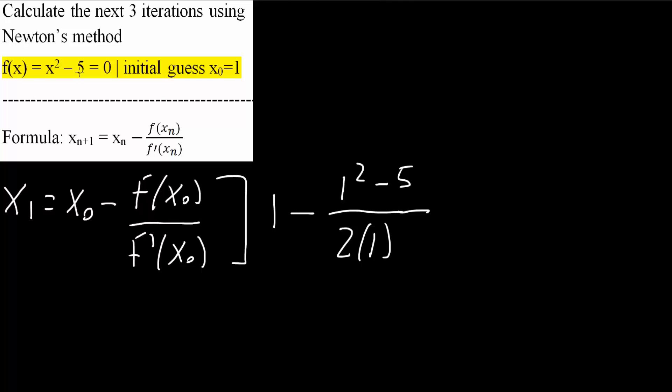And x is 1, and the derivative of 5 is 0. So we can keep it as is. So 1 minus, we have 1 squared minus 5 divided by 2. And so 1 minus 5 is going to give us negative 4 divided by 2, so negative 2. So 1 minus minus 2 would be 3. And if you want, you can plug this on the calculator.